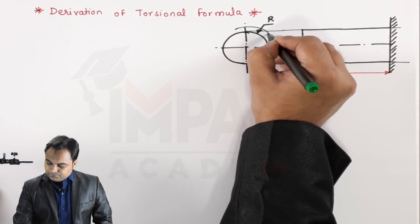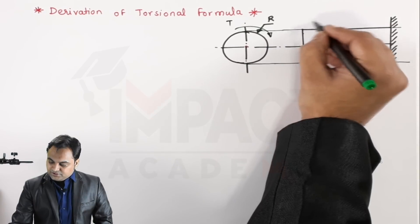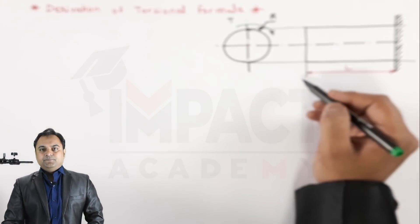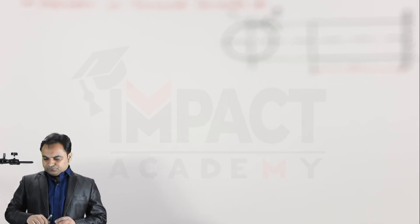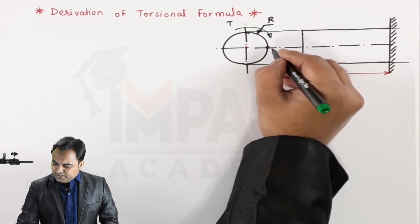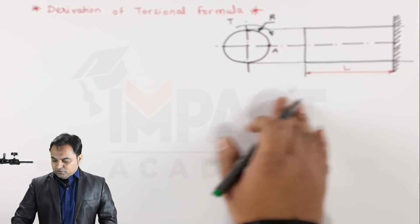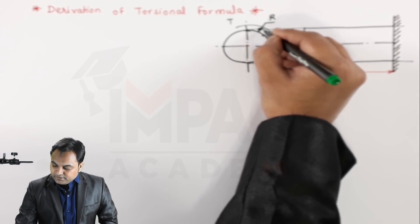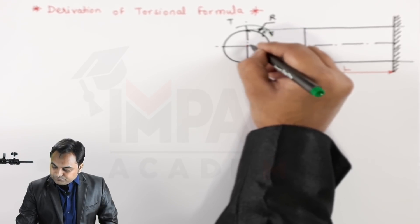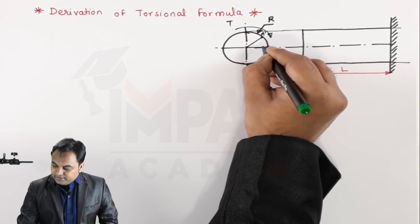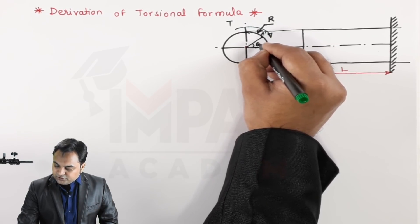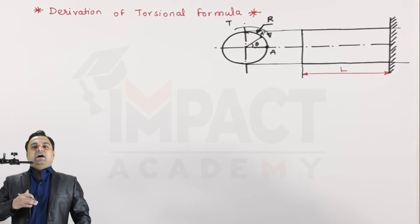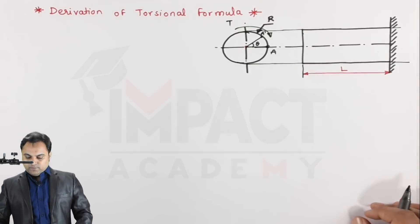When we apply a torque over this shaft in the clockwise direction, since the shaft is fixed at one end and free at the other, there will be twisting. Because of that twisting, if we take a point A on this shaft, it would shift to another location A dash. This angle A–A dash is denoted as theta, which is called the angle of twist, and it is assumed to be uniform throughout the length of the shaft.